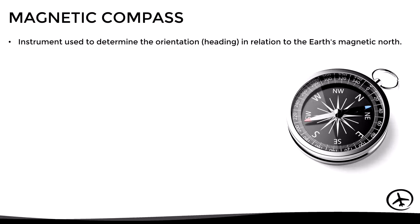In simple terms, the magnetic compass is an instrument used to determine the orientation or heading of the aircraft in relation to the earth's magnetic north. To do so, the compass aligns itself with the lines of the earth's magnetic field.